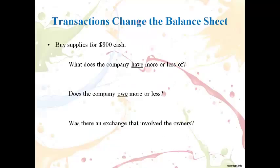This company bought supplies for $800 cash. This transaction is also an exchange of one asset for another — cash will decrease and supplies will increase. There was no change in what is owed since cash was paid, and there was no transaction directly with the owners. Cash will be lower and supplies will be higher on the balance sheet.